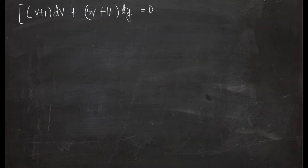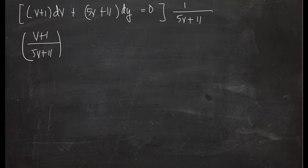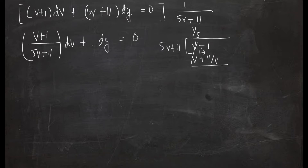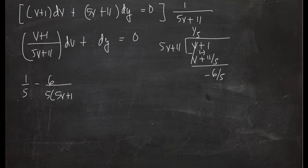From our resulting differential equation, since it can be solved by variable separable, we multiply by 1/(5v + 11), giving us (v + 1)/(5v + 11) dv + dy = 0. To integrate the first term, we simplify (v + 1)/(5v + 11), which becomes 1/5 minus 6/(5(5v + 11)) after the division.